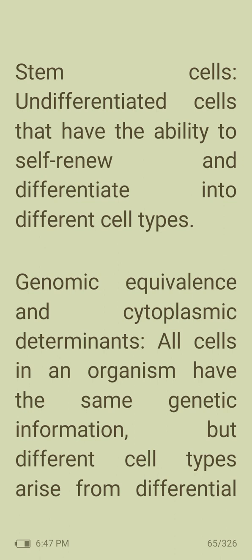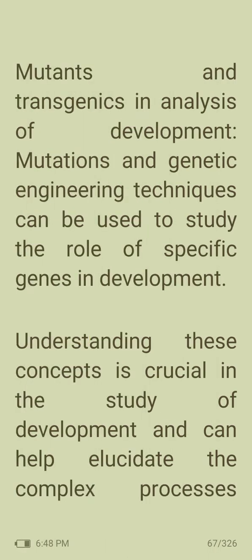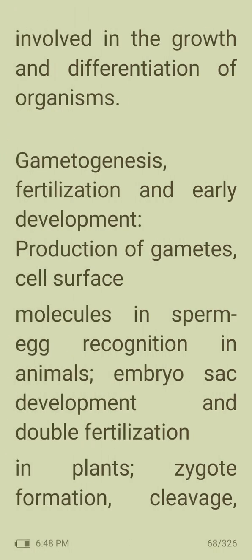All cells in an organism have the same genetic information, but different cell types arise from differential gene expression. Cytoplasmic determinants are molecules unequally distributed during cell division that influence the fate of daughter cells. Imprinting is a process by which certain genes are silenced or activated depending on whether they are inherited from the mother or father. Mutations and genetic engineering techniques can be used to study the role of specific genes in development, helping elucidate the complex processes involved in growth and differentiation.